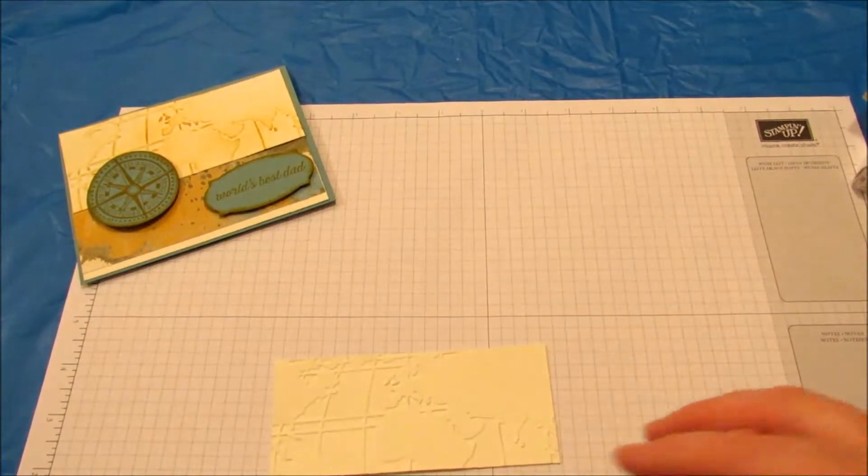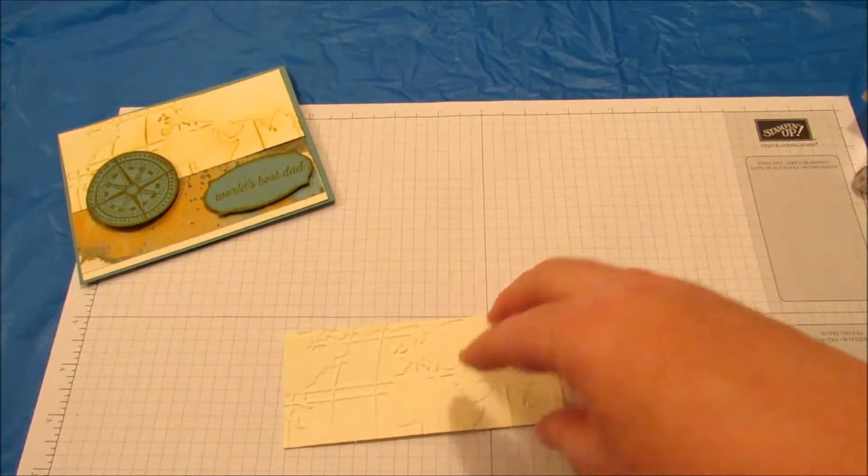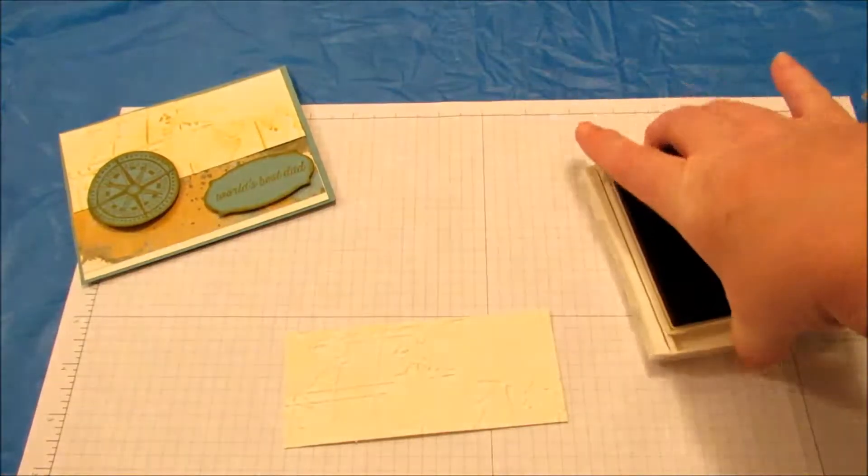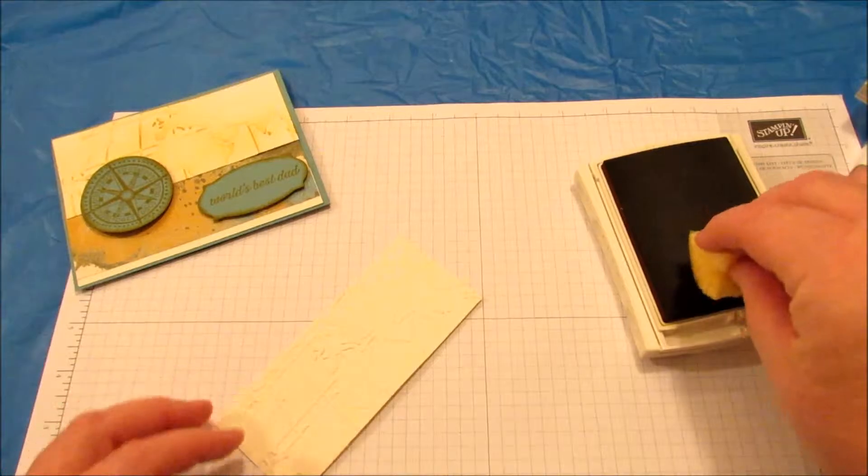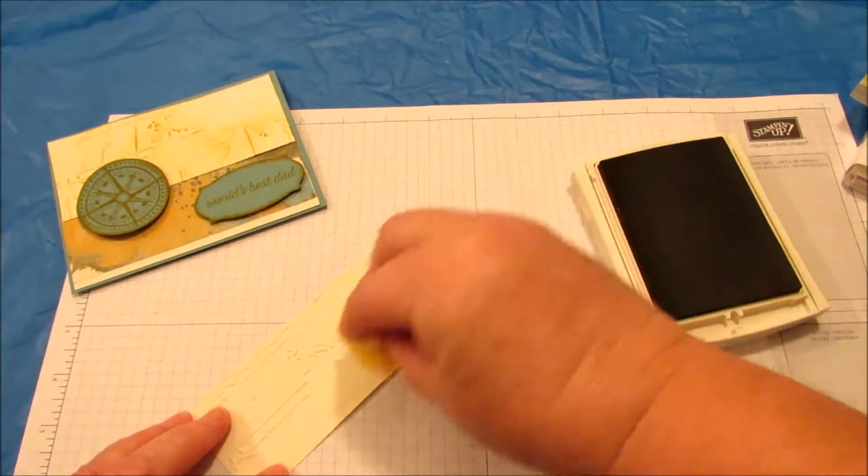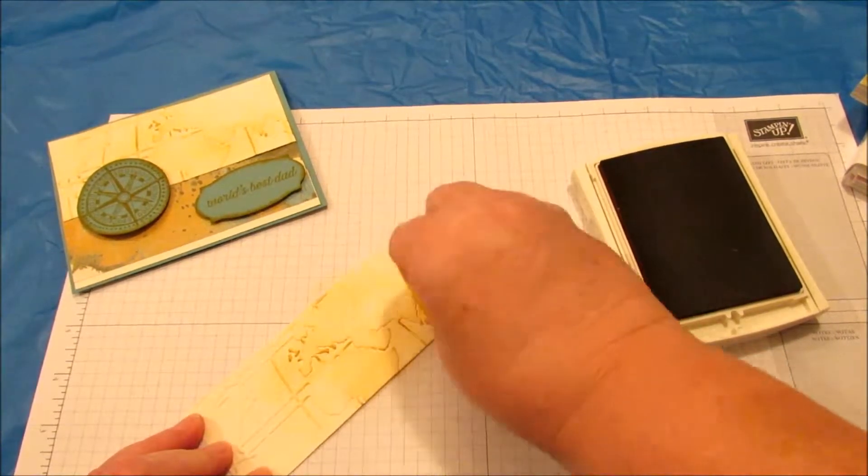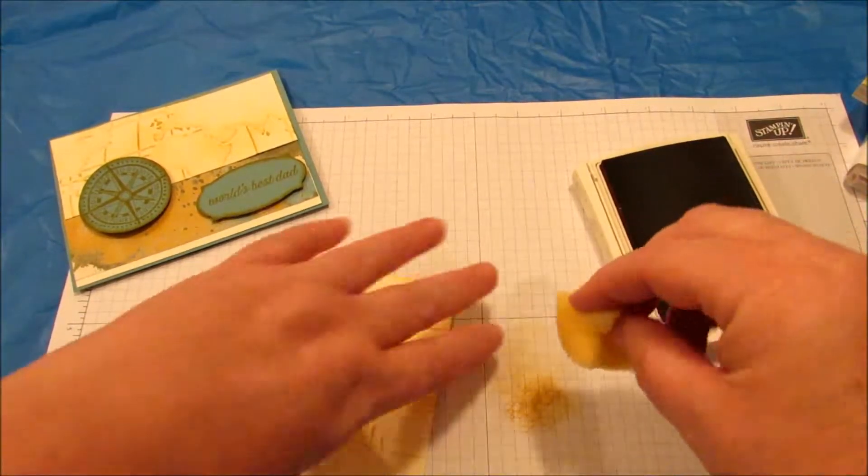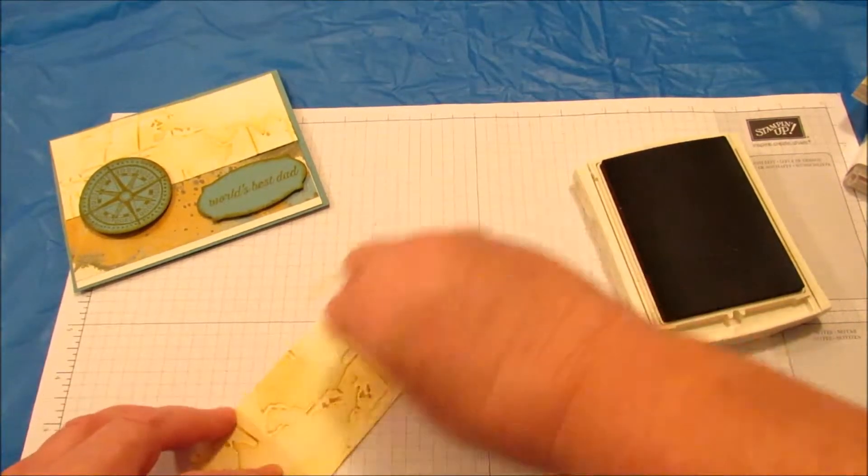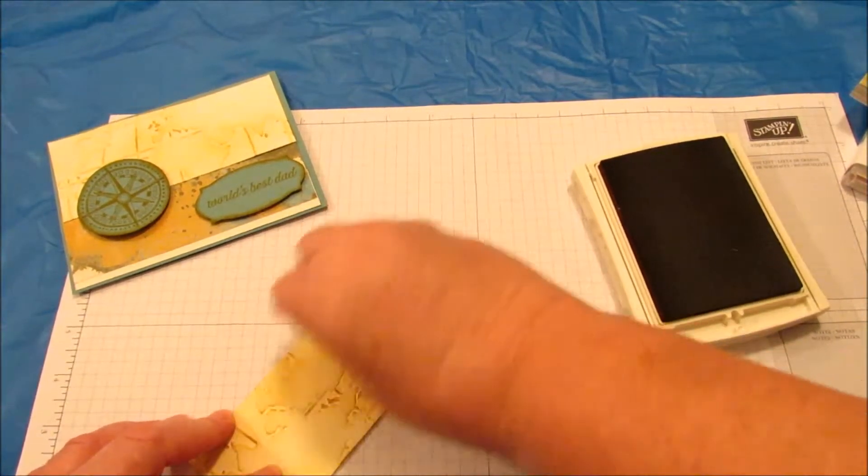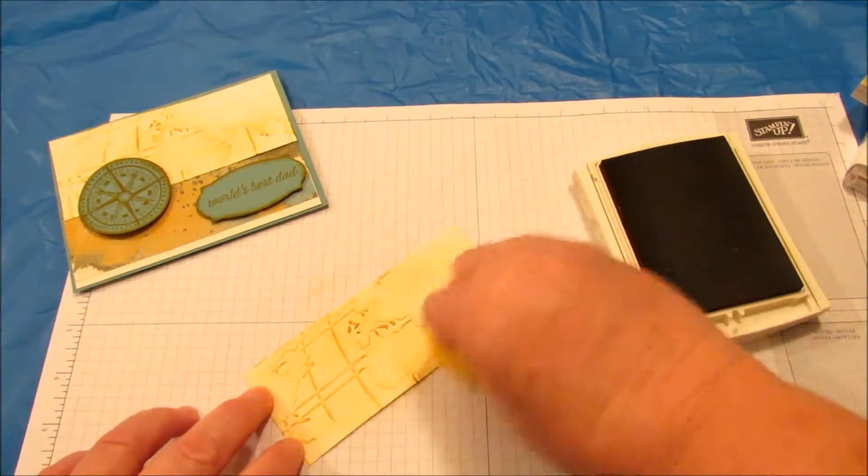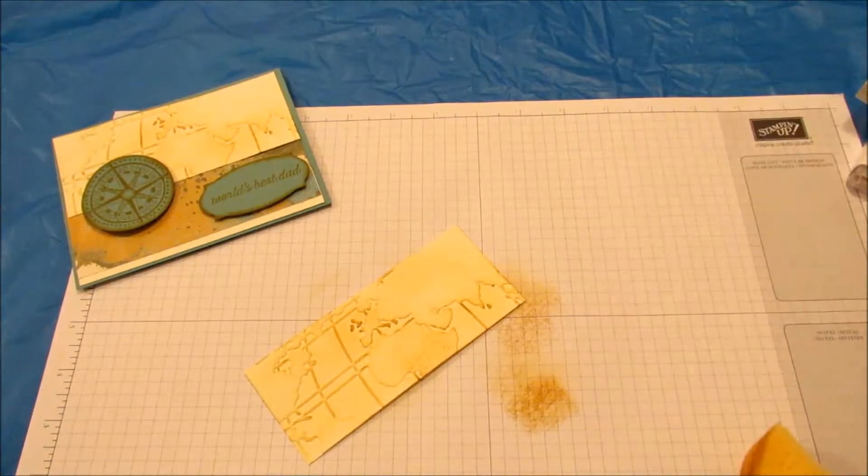I have some texture to this, I'm sponging it. So I'm taking the Delightful Dijon and I'm just kind of going off a little bit on the paper so it's not so much. I just kind of rubbed over the paper with it. Just so you can see it a little better. That's step one.